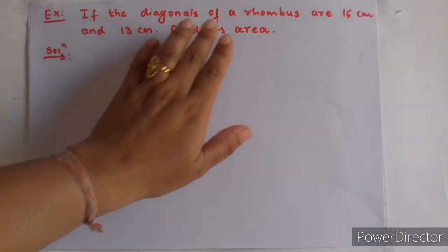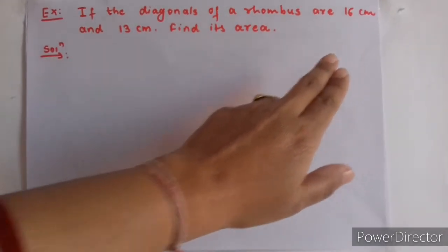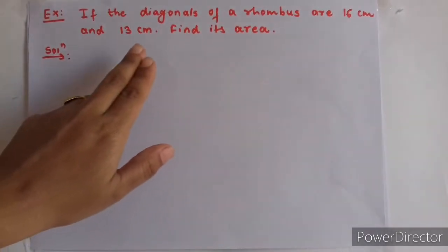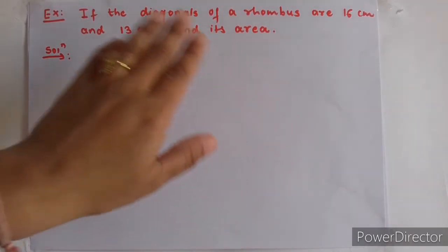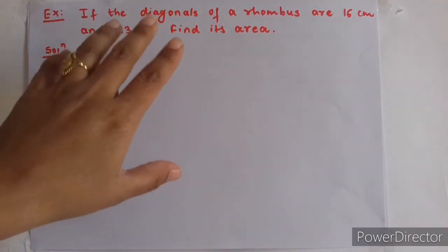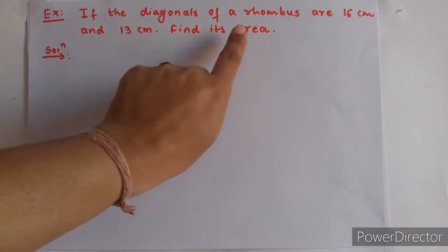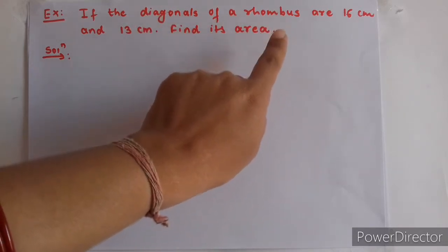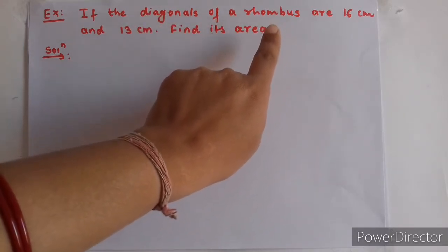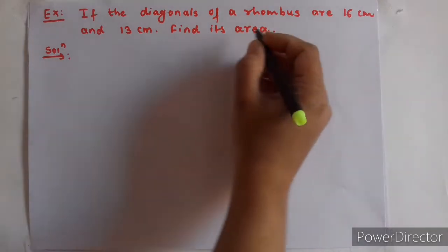First example: if the diagonals of a rhombus are 16 cm and 13 cm, find its area. Here the regular closed figure present is a rhombus, so we will use the rhombus formula.